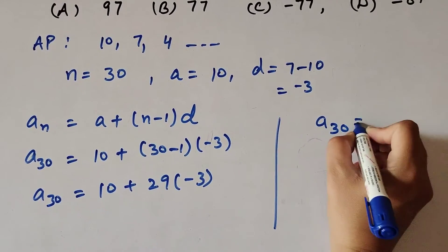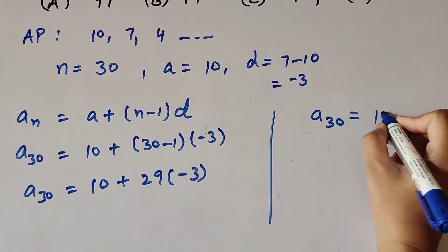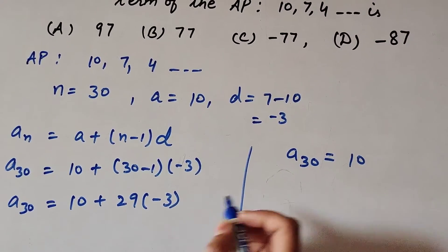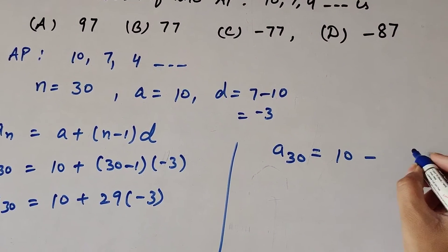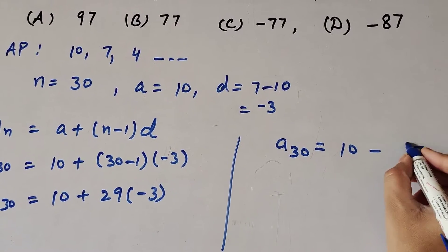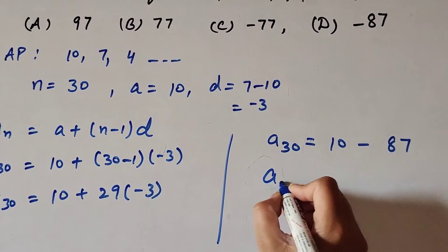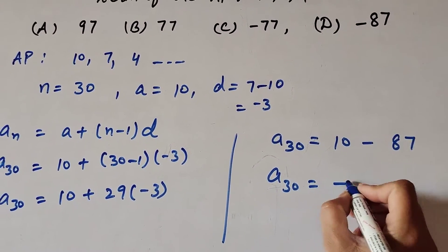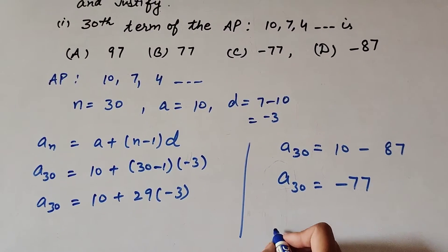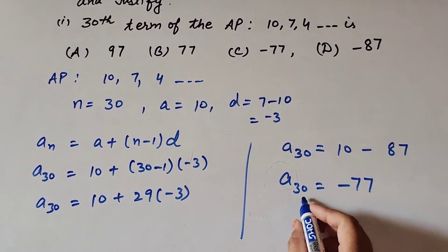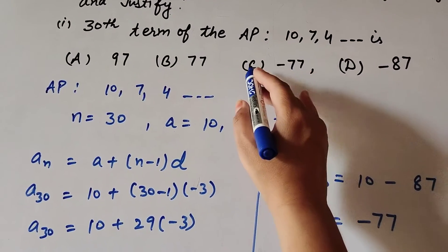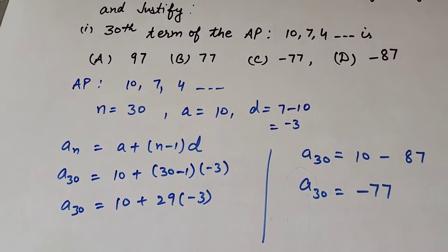So a₃₀ = 10 + 29 × (−3) = 10 − 87, which equals minus 77. So the 30th term of the AP is minus 77, and option C is the correct answer.